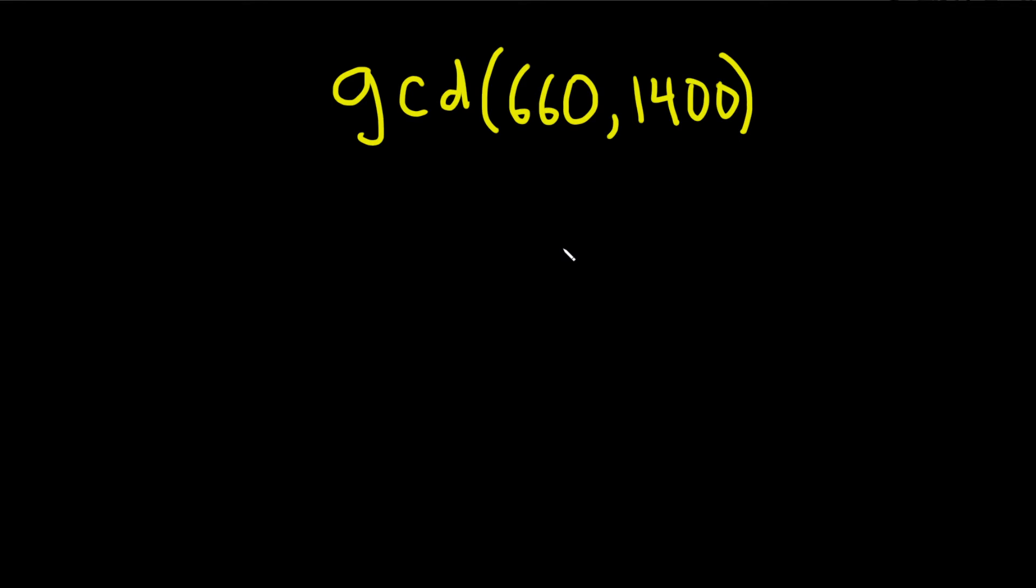Another way to do this is to find the prime factorization for each. So let's do that. Let's start with 660. So here's 660, and that can be factored as 66 times 10. You can write 660 as 66 times 10.